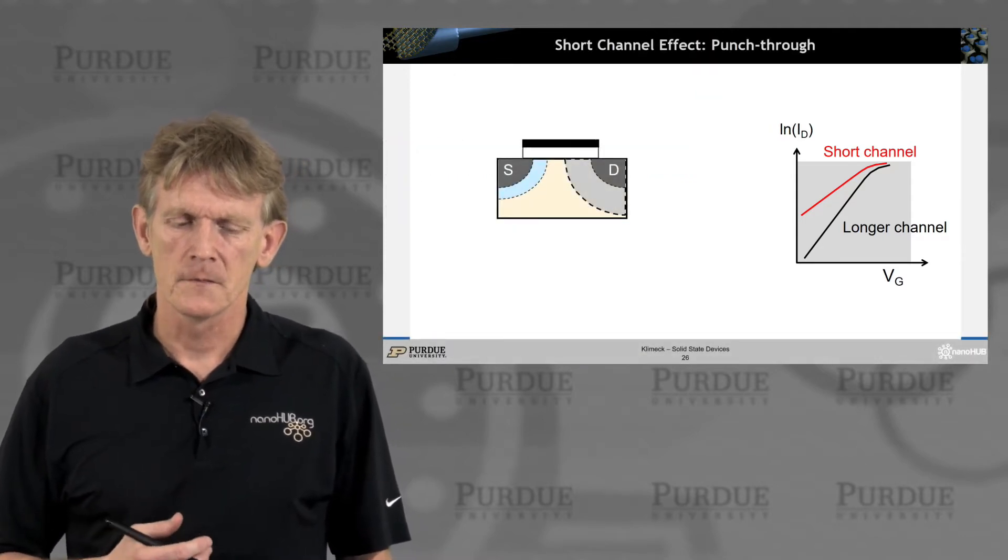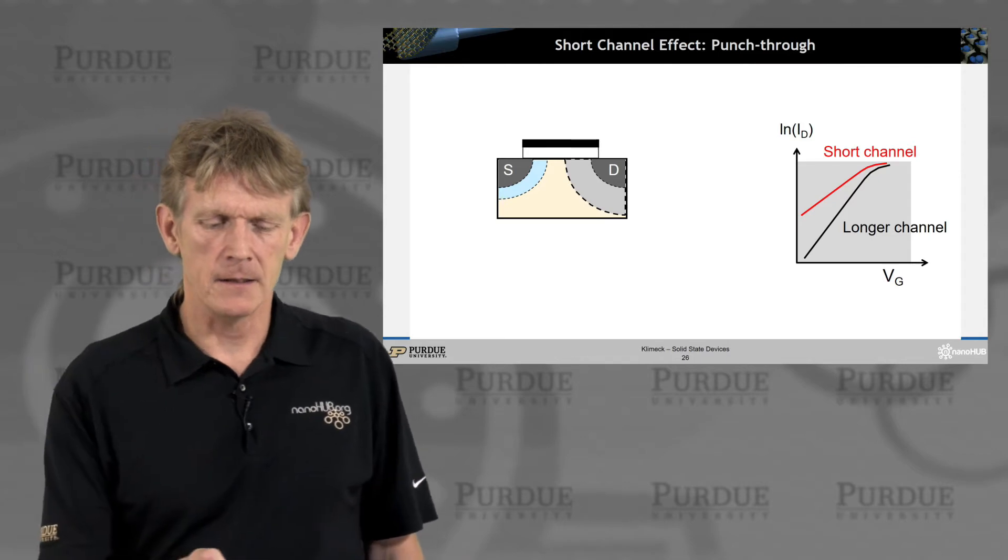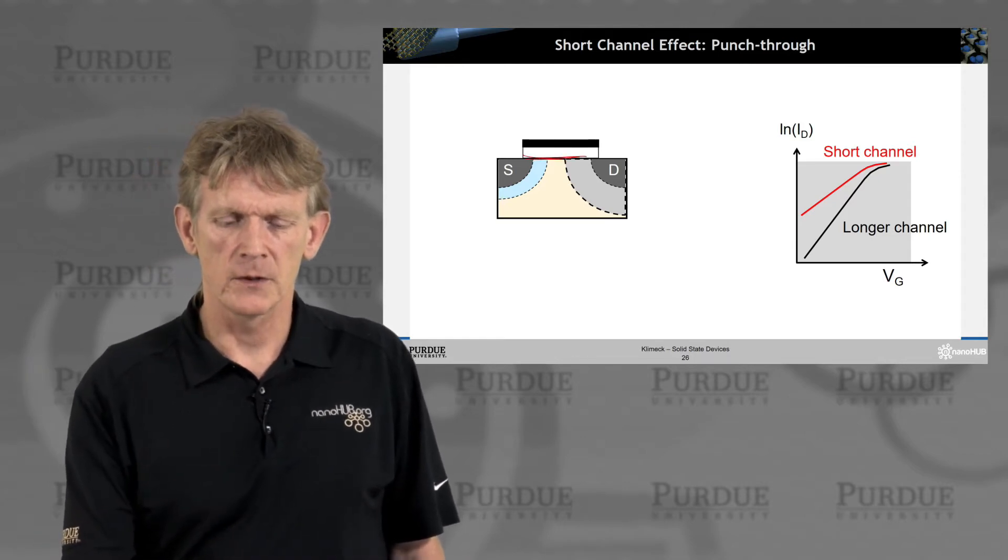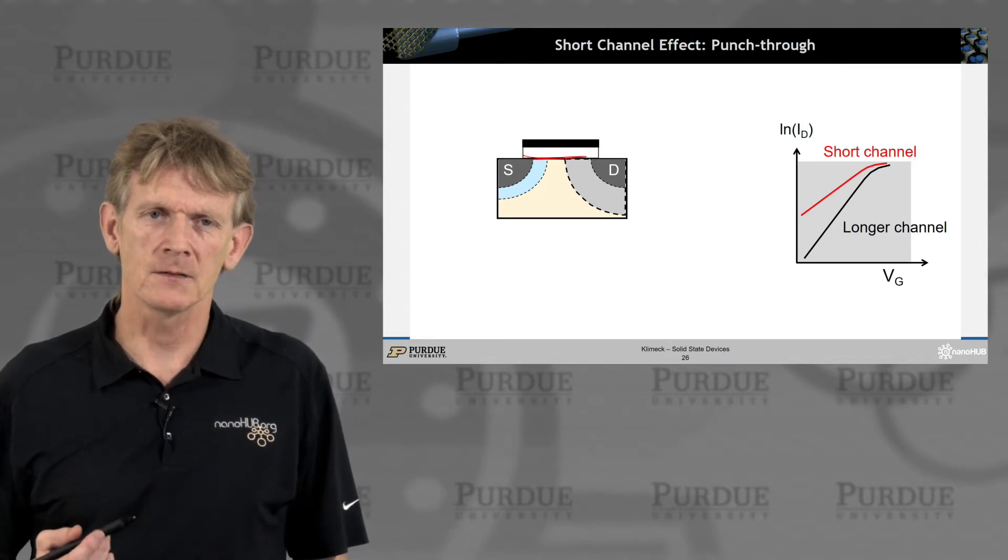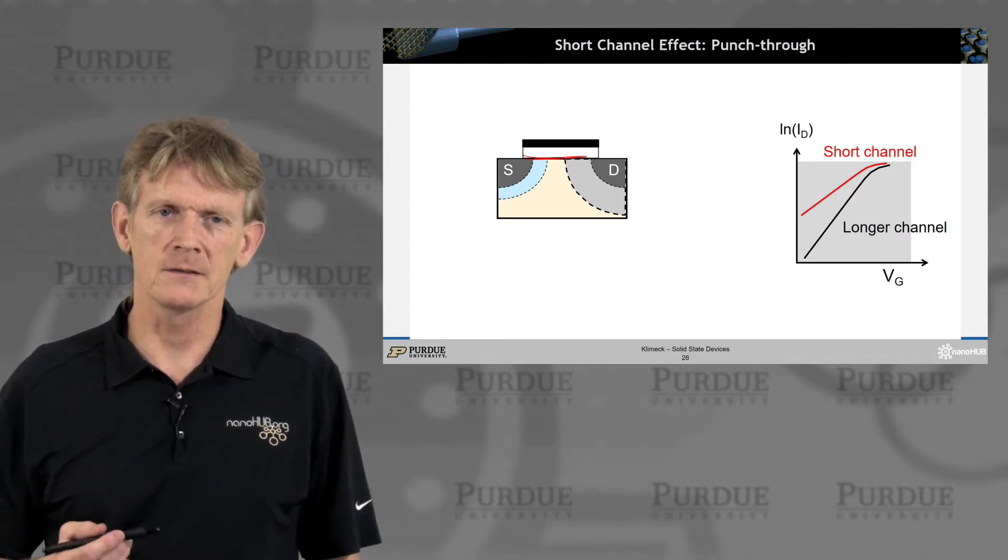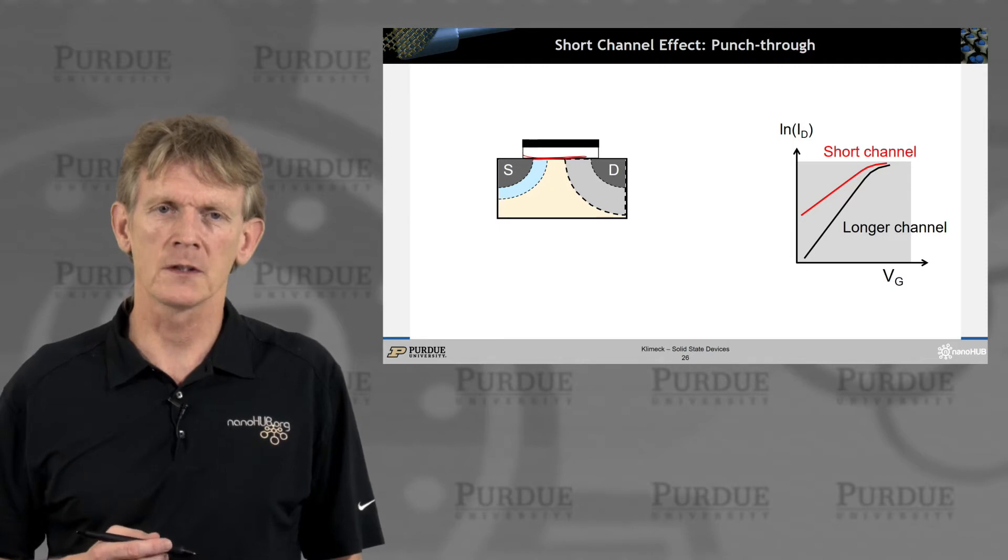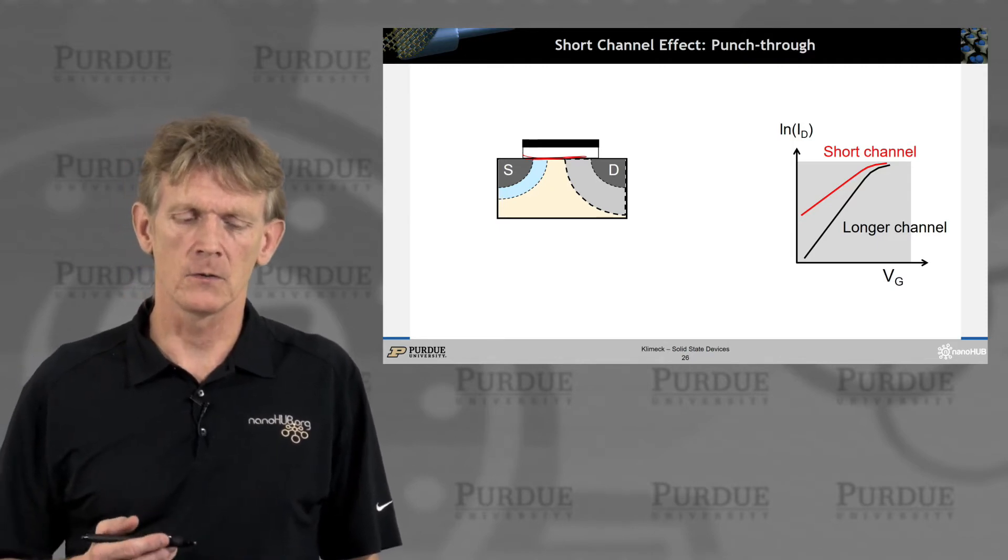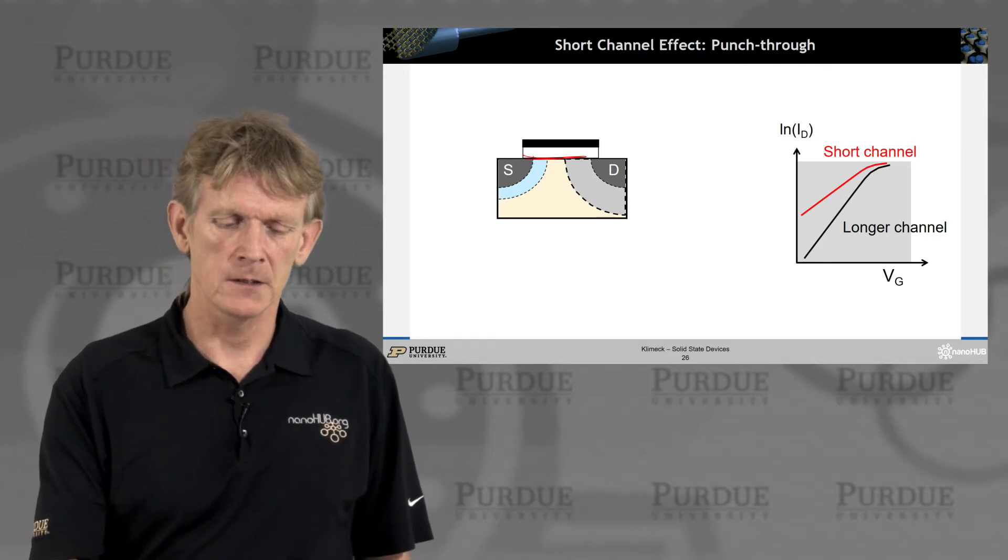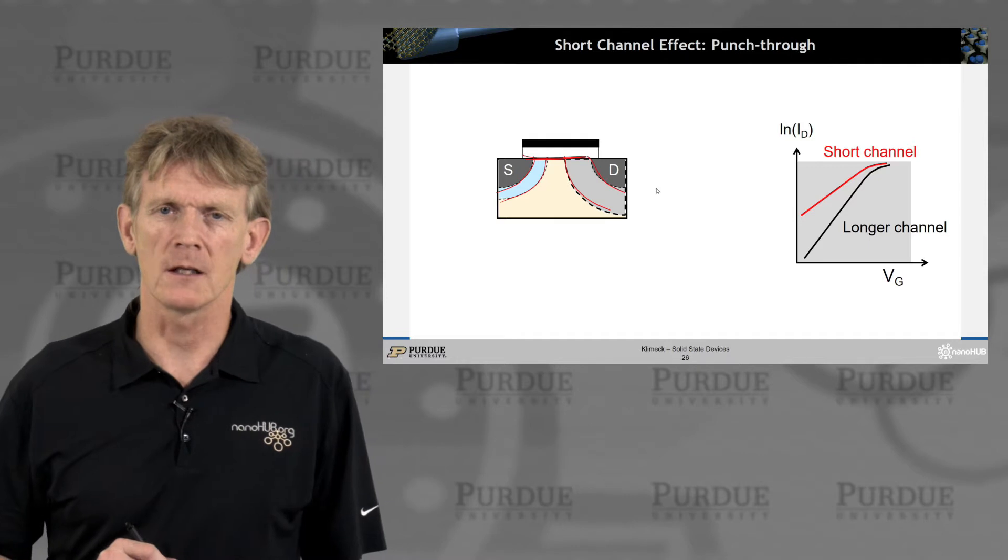You're making the gate length, the distance between source and drain, smaller and smaller. We had discussed similar things in a BJT. When you bring these PN junctions closer and closer, they start to talk to each other. These PN junctions are coming very close together.